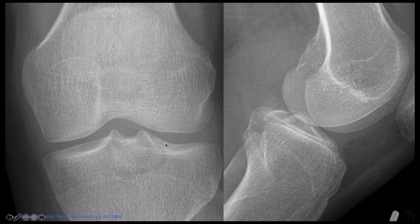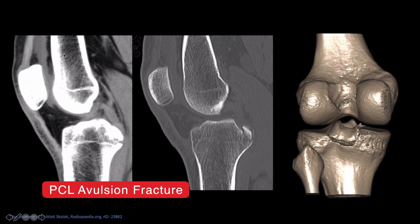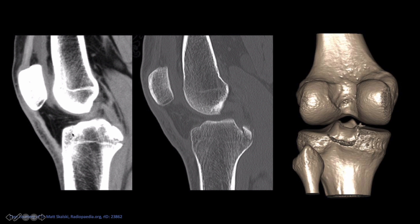Another case of an avulsed bony fragment - you can see a slightly displaced fracture with a loose fragment here, typical for a PCL posterior cruciate ligament avulsion fracture. You can see it on the CT here in the soft tissue window in the sagittal plane - that's the PCL, and this is the avulsed segment, also visible on 3D reconstruction looking at the knee from the back.